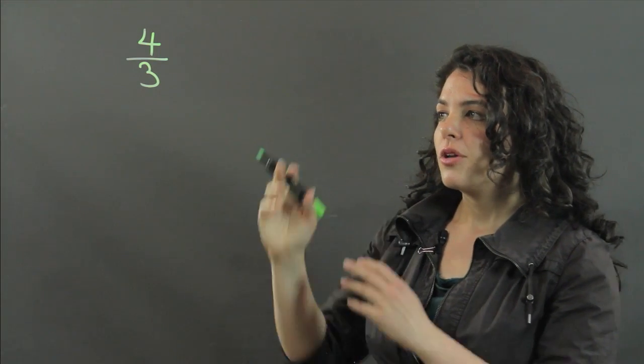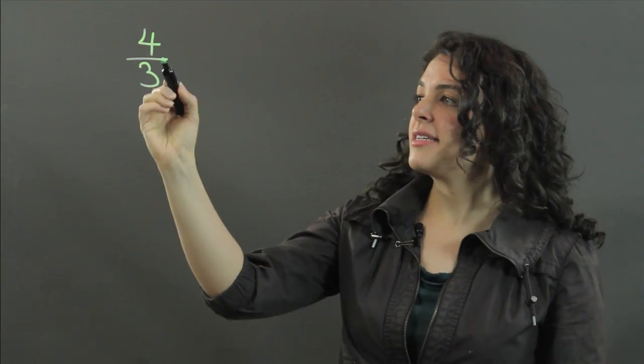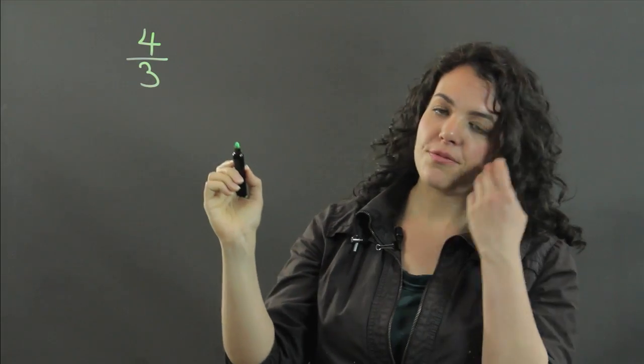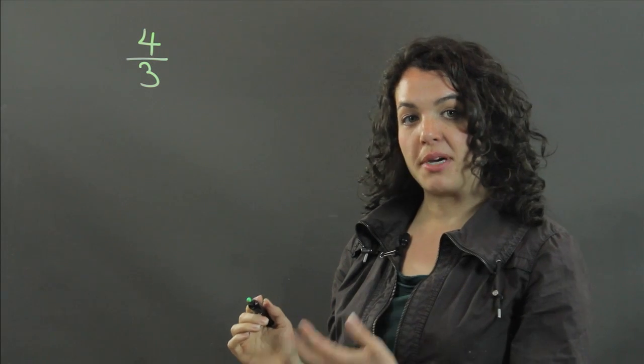Now, you're reading this as 4 thirds, and what I want to point out to you is that this line that makes the fraction is also a symbol for division, and that 4 thirds is the same as 4 divided by 3.